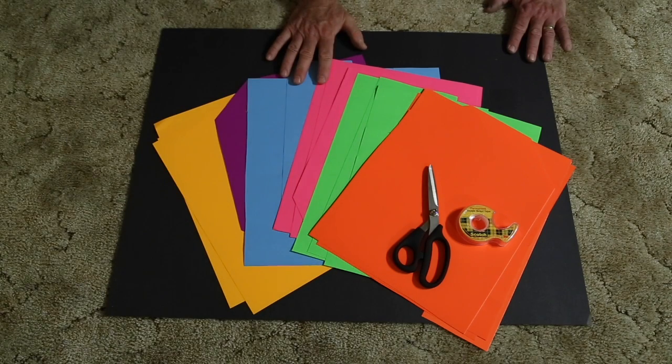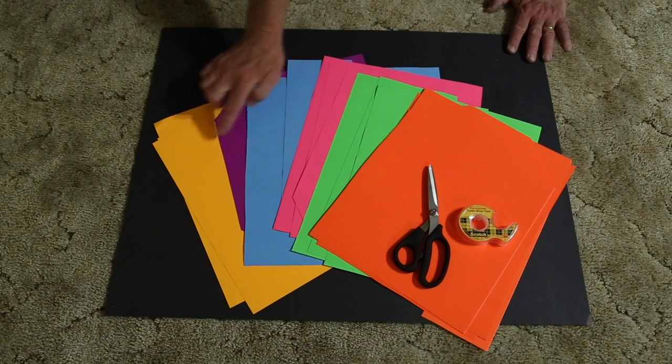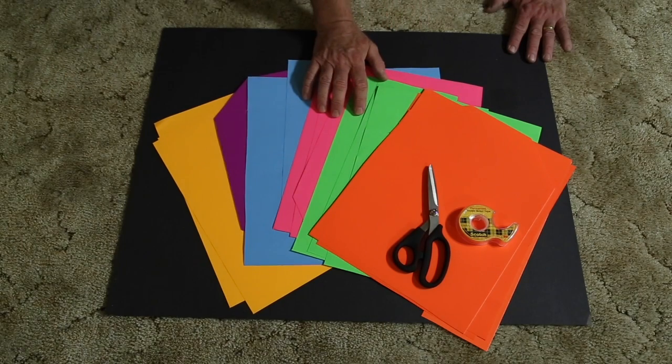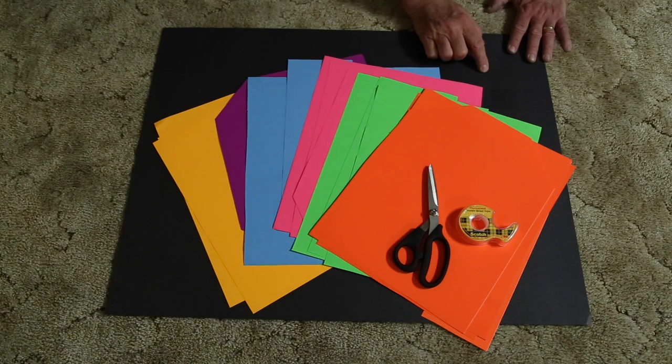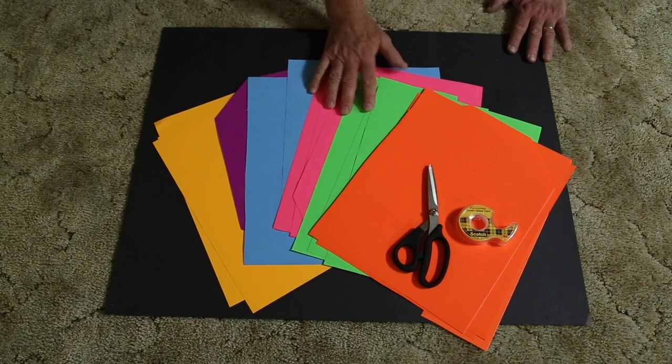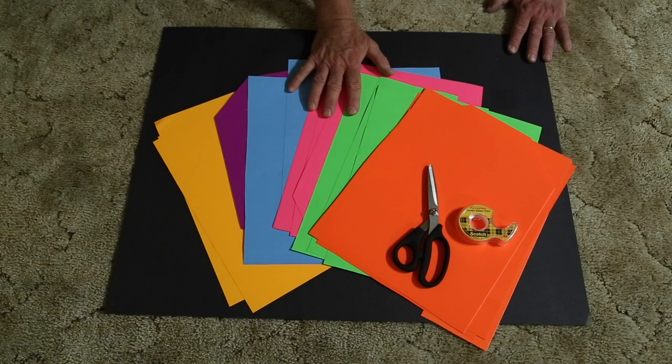What you have the children do is cut out shapes from the different colors and use them to make pictures on the black poster board. They can be faces, geometric designs, anything they want. Let's see what some of them look like.